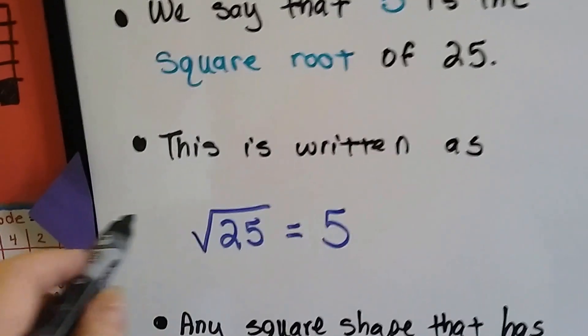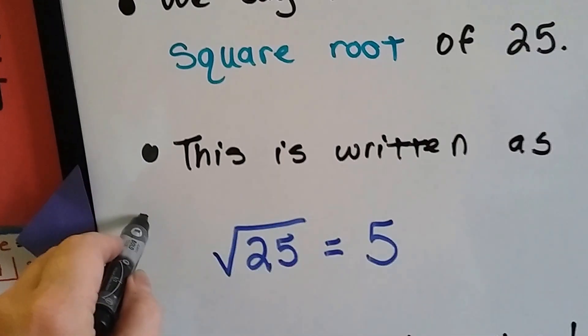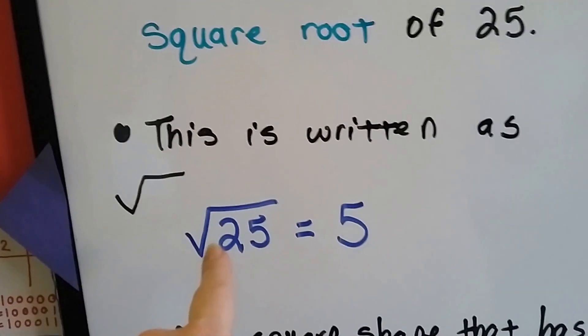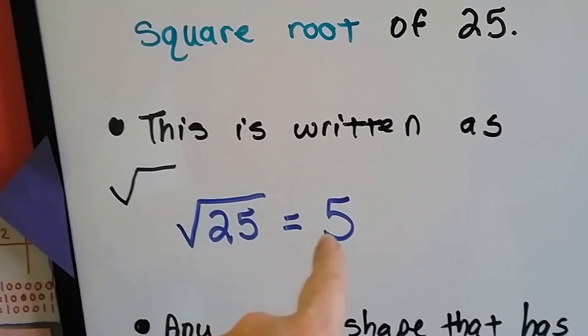This is written as this symbol. It's like a check mark on a long division sign. The square root of 25 equals 5.